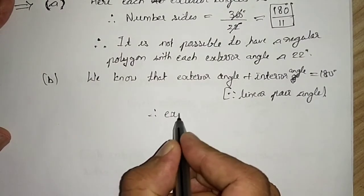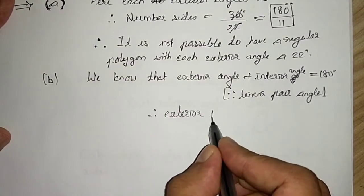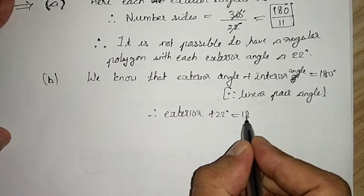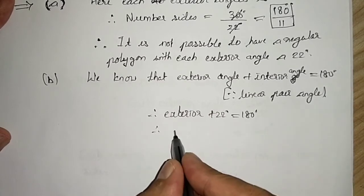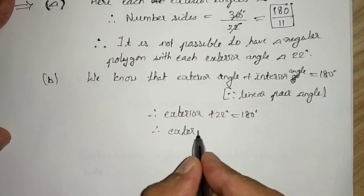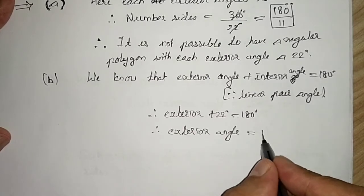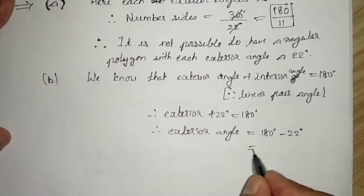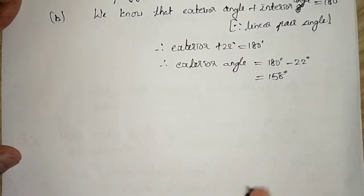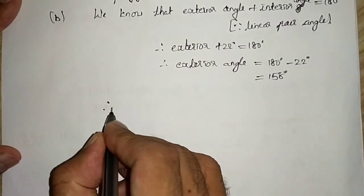And here interior angle is 22. Therefore, exterior angle plus 22 degrees is equal to 180 degrees. Therefore, exterior angle is equal to 180 degrees minus 22 degrees, which is equal to 158 degrees.